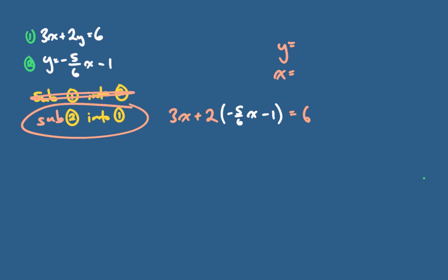Remembering I have to expand that 2 into the brackets: I get 3x, and carefully watching my signs, I get minus 10/6 x minus 2 equals 6. Putting that fraction in lowest terms, this becomes 3x minus 5/3 x minus 2 equals 6.